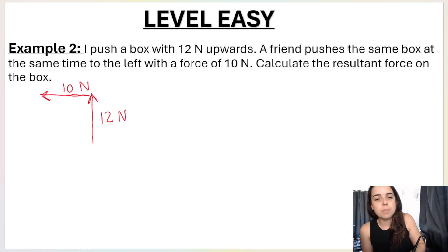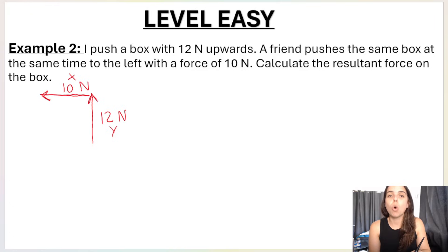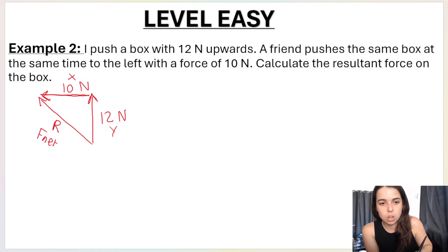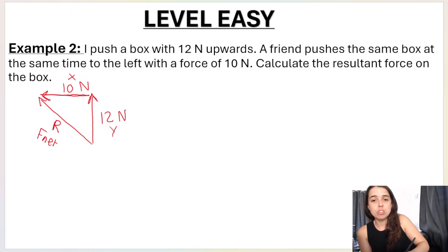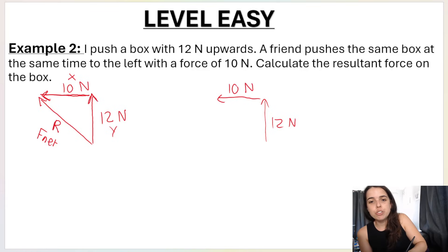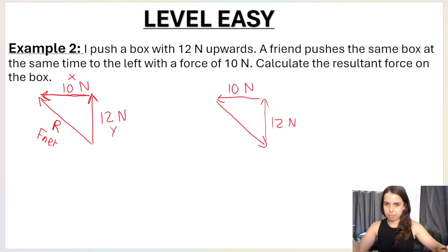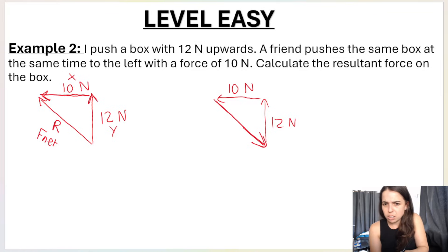This is my y-vector and this is my x-vector. The resultant goes from the tail of the first to the head of the last — we call it R or F-net. A common mistake is drawing the arrow pointing down and to the right, which is wrong. Since 12 newtons goes up and 10 newtons goes to the left, the resultant must point up and to the left.